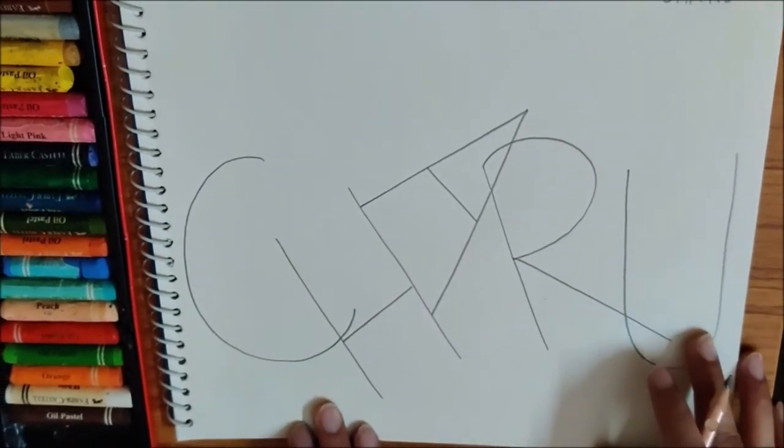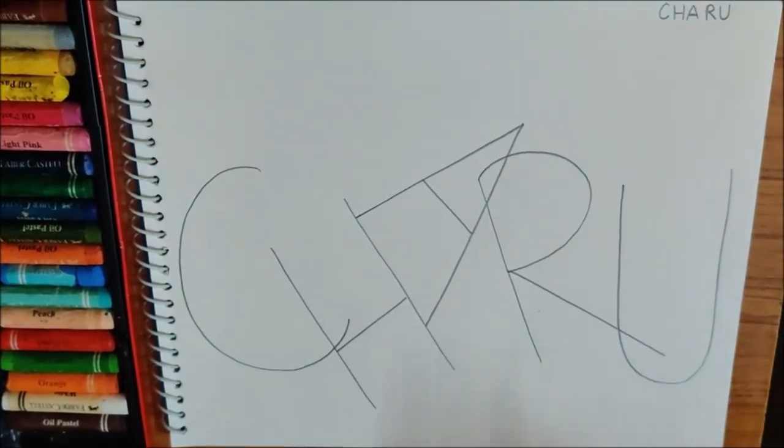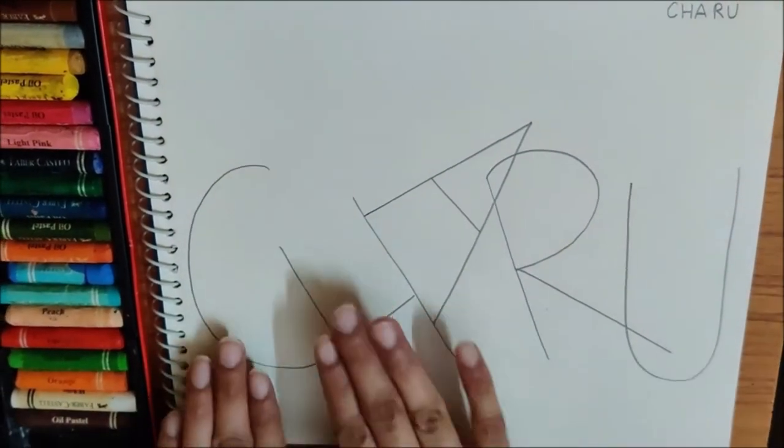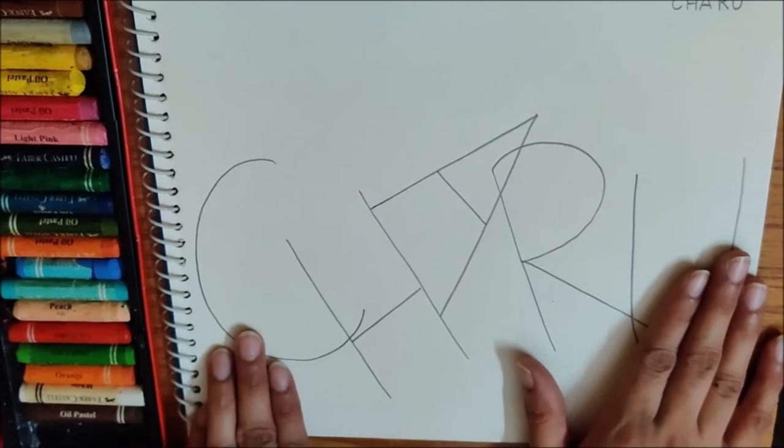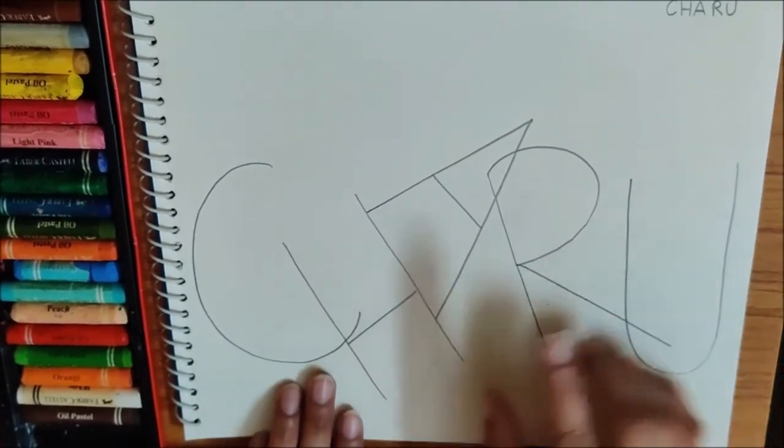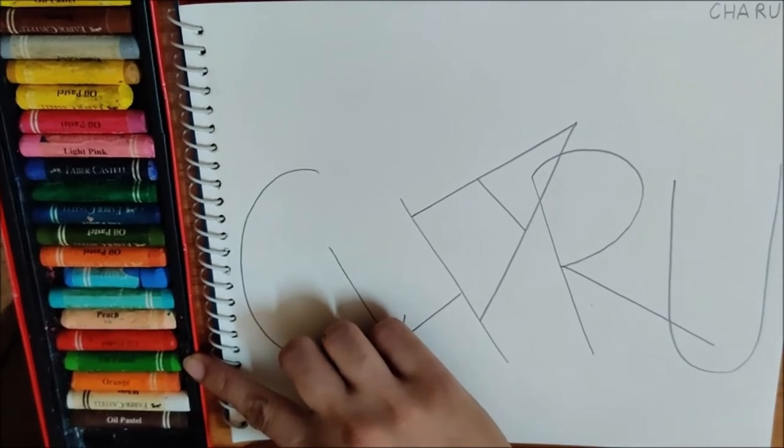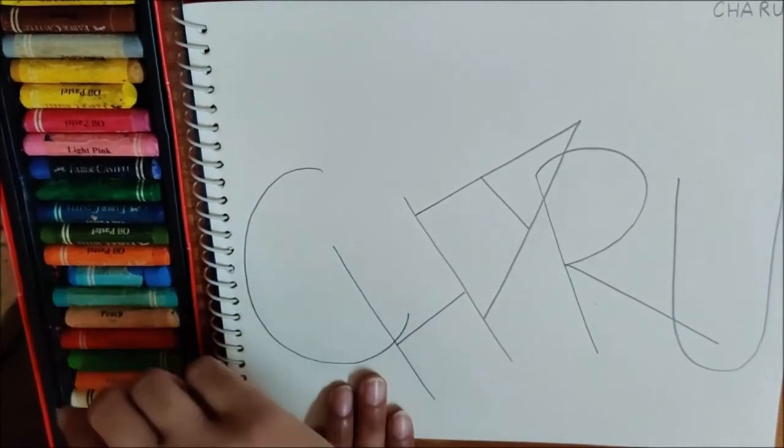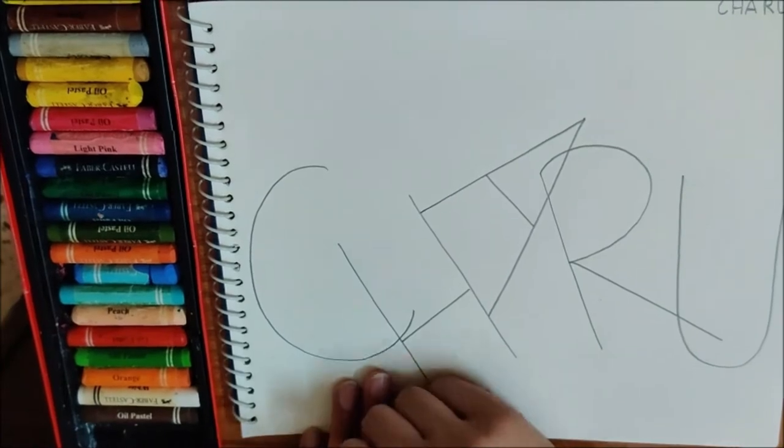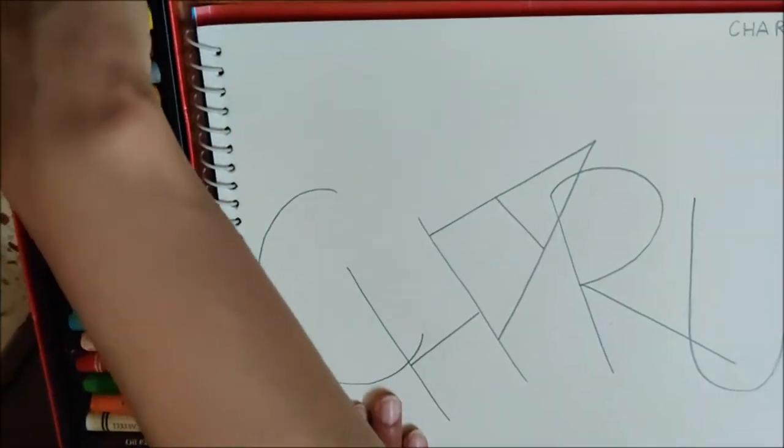Now, it is time to make all these letters colourful. To make all these letters colourful, children, you need crayons. This is Charu ma'am's set. But your set is different. You have to use your set and take out any colour. I am taking green.